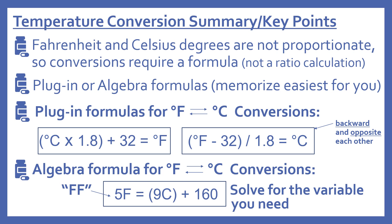These formulas have to be memorized, so choose the method that's easiest to memorize. The plug-in formulas are: degrees Celsius times 1.8 in parentheses plus 32 equals degrees Fahrenheit; and degrees Fahrenheit minus 32 in parentheses divided by 1.8 equals degrees Celsius.